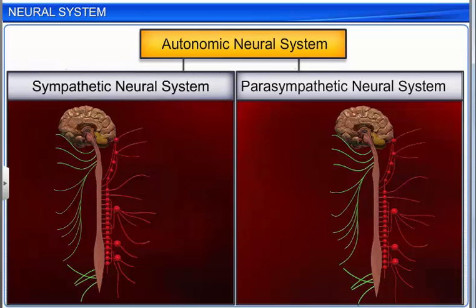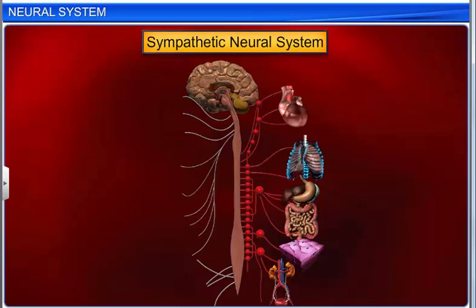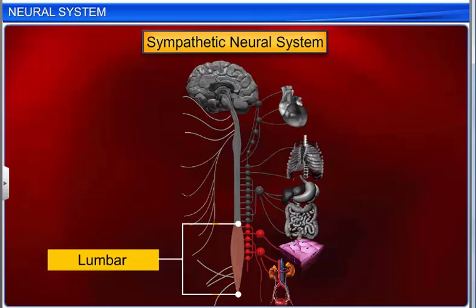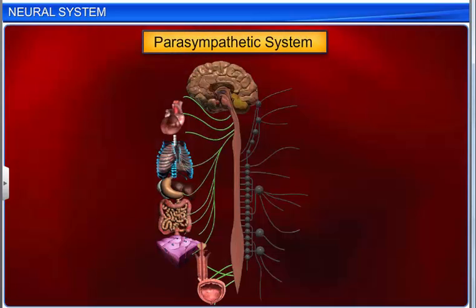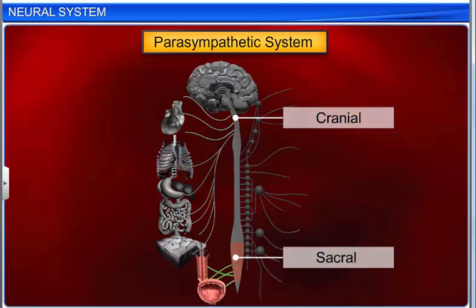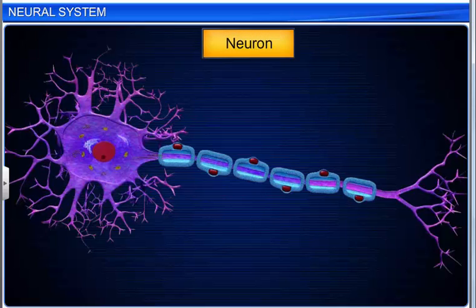The autonomic neural system is further classified into the sympathetic neural system and the parasympathetic neural system. The sympathetic system comprises the neurons of the thoracic and lumbar regions. The parasympathetic system comprises the cranial and sacral neurons. Let's look at the structure and types of neurons now.